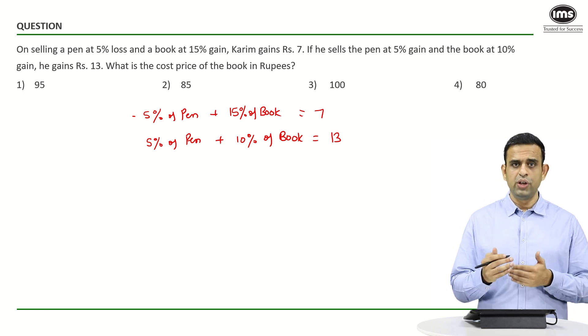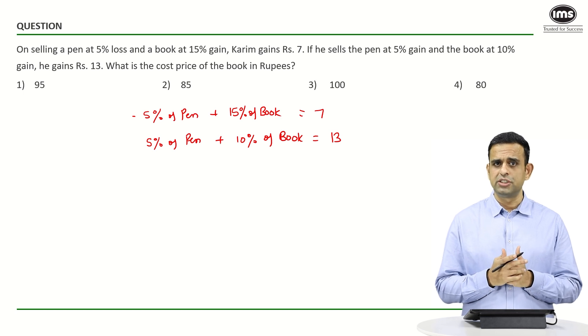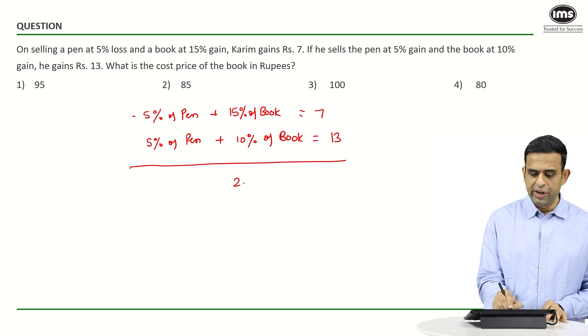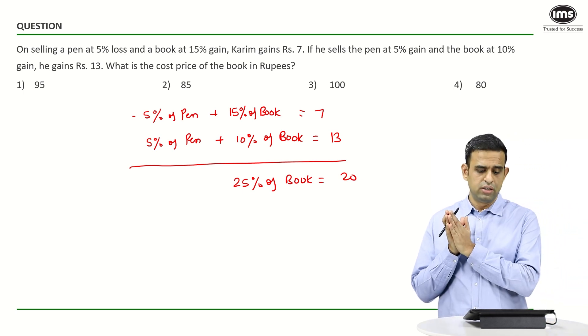If you need to eliminate pen from these two equations, I can simply add the two equations. If you add the two equations, you simply get 25% of the cost price of book is equal to 20.